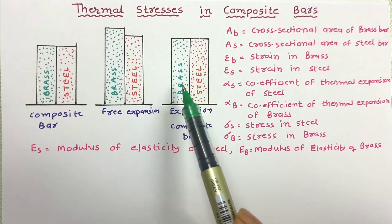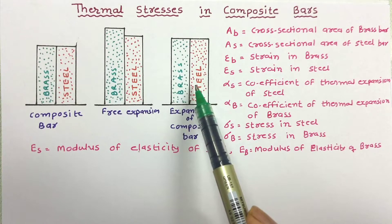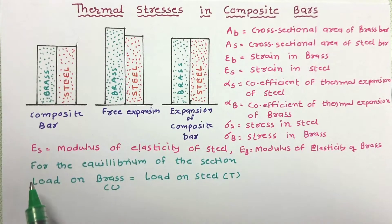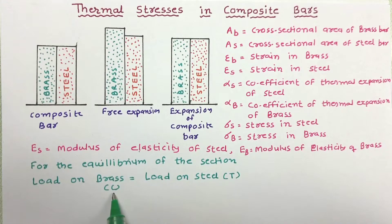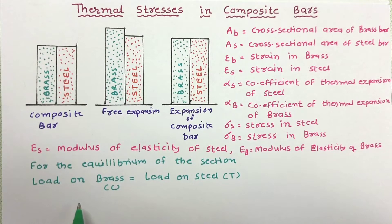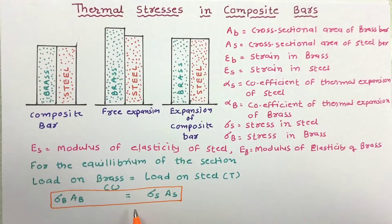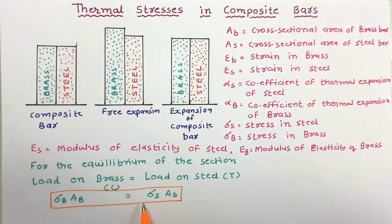Since this composite bar is in equilibrium, compression in brass equals tension in steel. For the equilibrium of this section, load on brass (compressive) equals load on steel (tensile). Since load equals stress times area, we can write: σb · Ab = σs · As. This is a very important equation we will use to solve problems on stresses in composite bars.